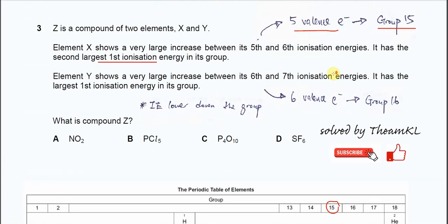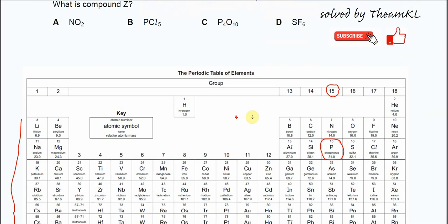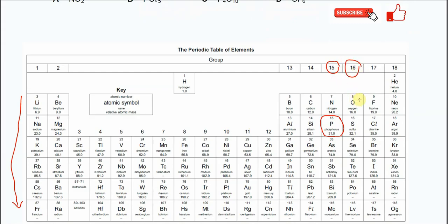Element Y shows a large increase between the 6th and 7th ionization energy. This tells us that element Y has 6 valence electrons, which means it's a Group 16 element. Group 16 — it has the largest first IE in this group, which means it is oxygen, as it is the first element in that group in the periodic table.